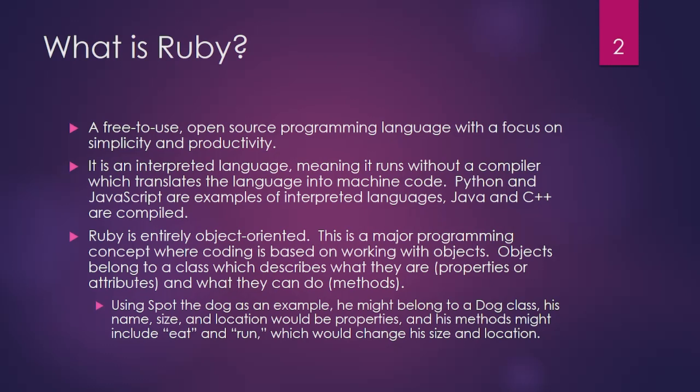Ruby is entirely object-oriented. This is a major programming concept where coding is based on working with objects. An object would belong to a class, and that class would be loaded with properties and methods, which describe what an object is and what you can do with it. So for an example, if you had Spot the dog, Spot might belong to a dog class. In that dog class, dogs all have a name, size, and location, and they have methods called eat and run, which would be ways to change the dog's size and location.